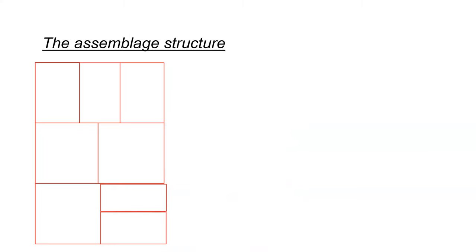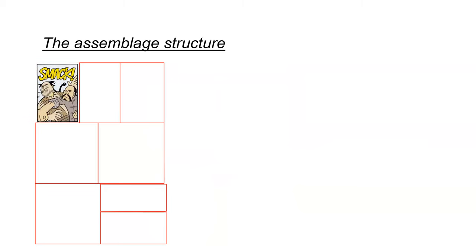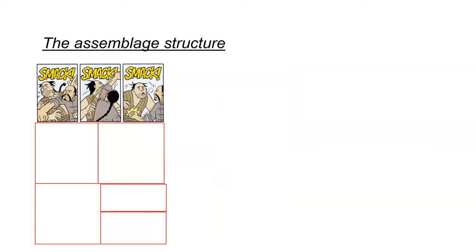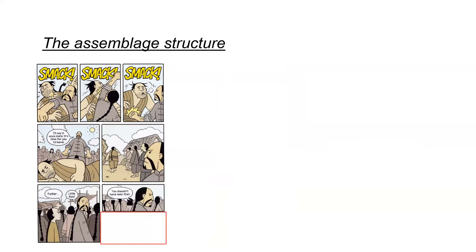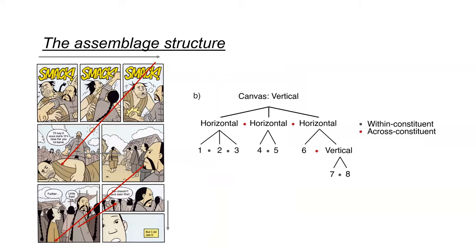How we navigate through panels is called the assembly structure. It is different than the layout — layout might be the same, but we might read them differently. How we navigate through those panels depends on how we build this assembly structure in our minds, and readers do this as they read the comic. So here, for instance, we go from left to right, then down diagonal, then lateral left to right, down diagonal, up diagonal, and downward again — together, we built the assembly structure.